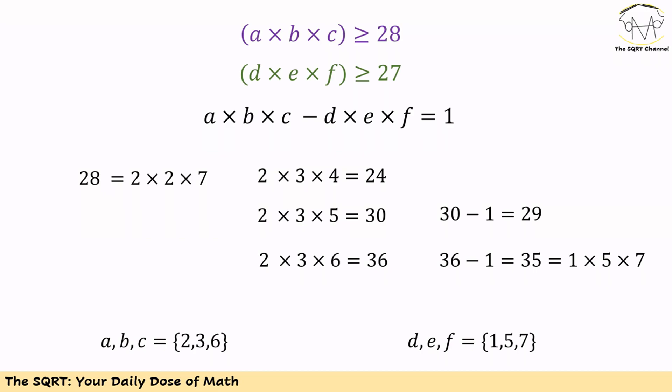First of all, 28 can be written as 4 times 7, and 4 is 2 times 2. We want to find the minimum possible value that we can have for A, B, and C to have this inequality.